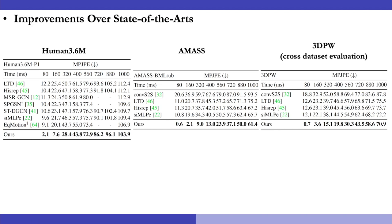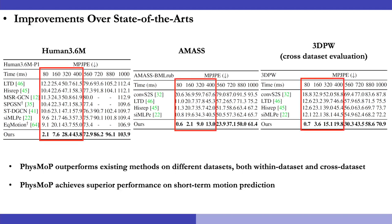In the experiment results, we demonstrate that PhysMoP outperforms existing methods on different datasets, both within datasets and across datasets. Moreover, PhysMoP achieved superior performance on short-term human motion prediction as indicated by the rectangle shown here.